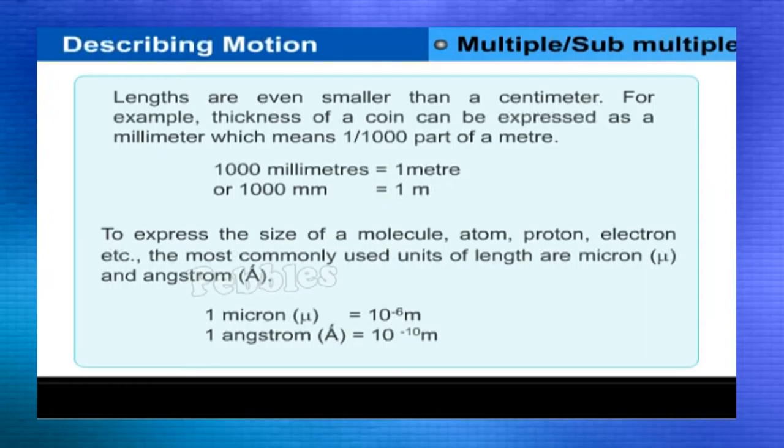To express the size of a molecule, atom, proton, electron, etc., the most commonly used units of length are micron and angstrom. One micron is equal to 10 to the power of minus 6 m. One angstrom is equal to 10 to the power of minus 10 m.